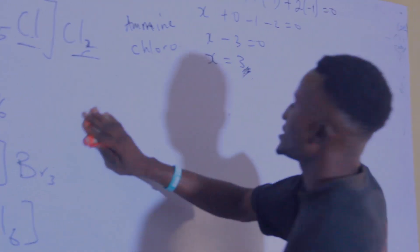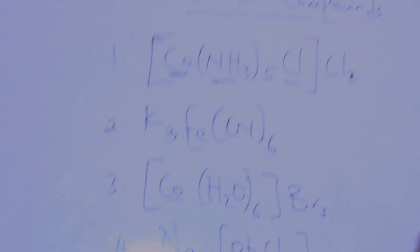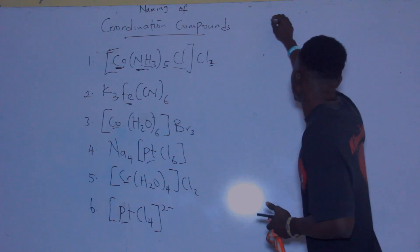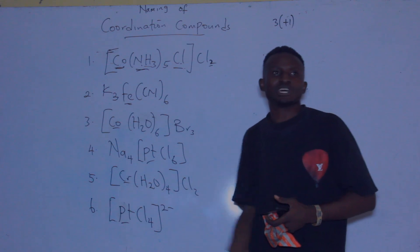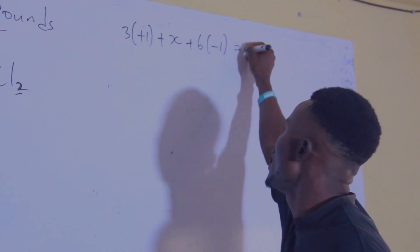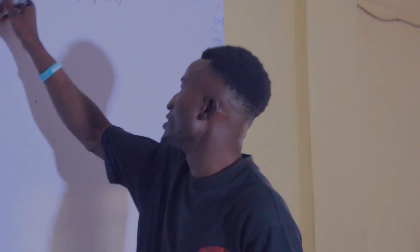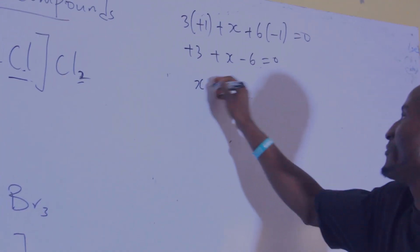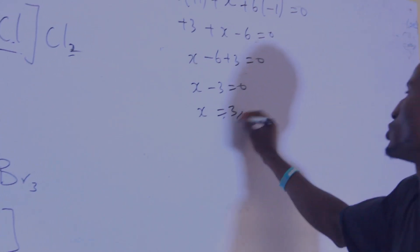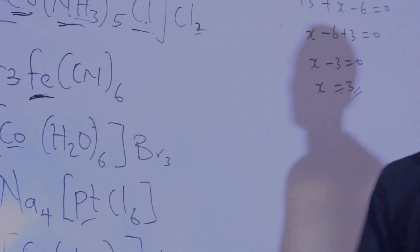Now for the second compound, we have potassium, iron, and cyanide. The central ion is iron. To find its oxidation state: 3(+1) for potassium, plus X for iron, plus 6(−1) for cyanide, all equals zero. So 3 + X − 6 = 0, giving X − 3 = 0, therefore X = 3. The oxidation number of iron is three.